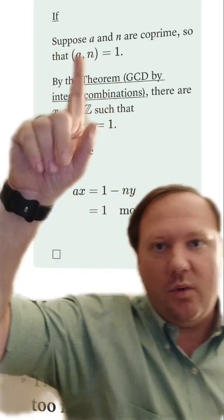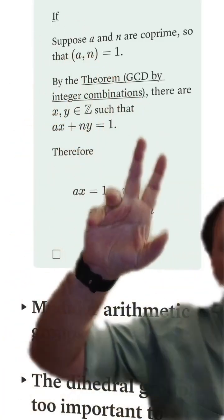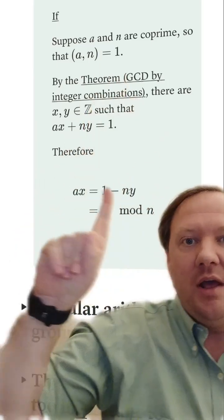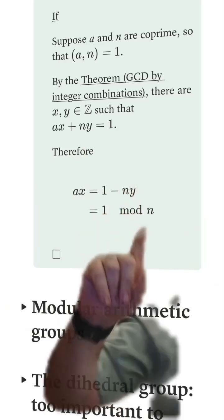Let's now do the if direction, which means we're going to assume that a and n are coprime. Now by the theorem we just proved a little while ago, that means there is some integer combination equal to one.